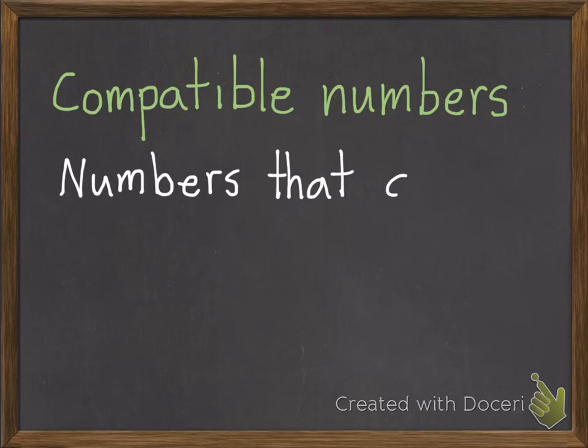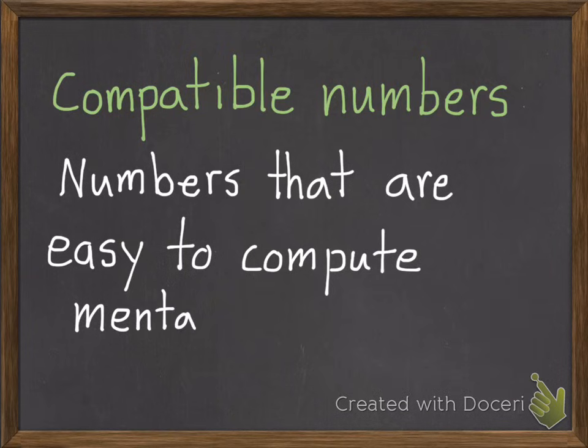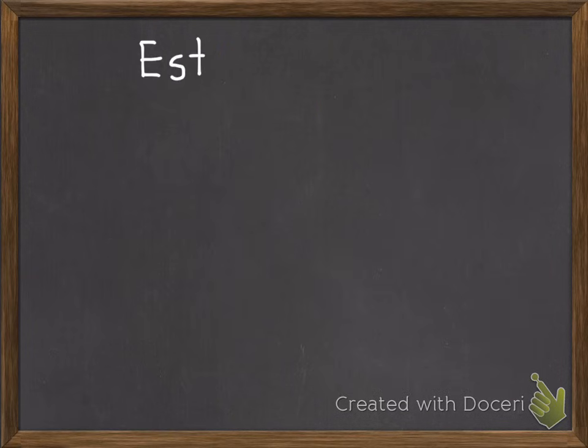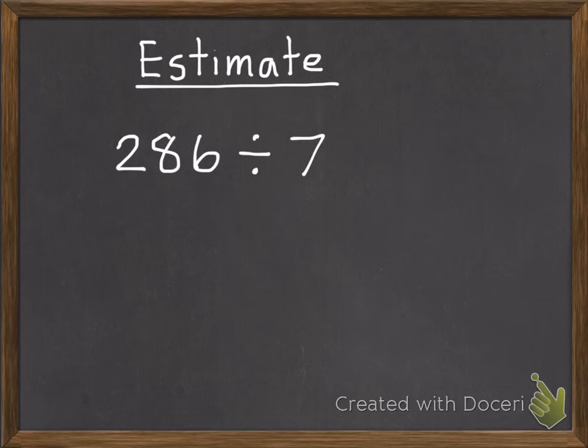Compatible numbers are numbers that are easy to compute mentally. So if we have a division problem that we needed to estimate, such as 286 divided by 7, normally in the past, to estimate, we'd use rounding.